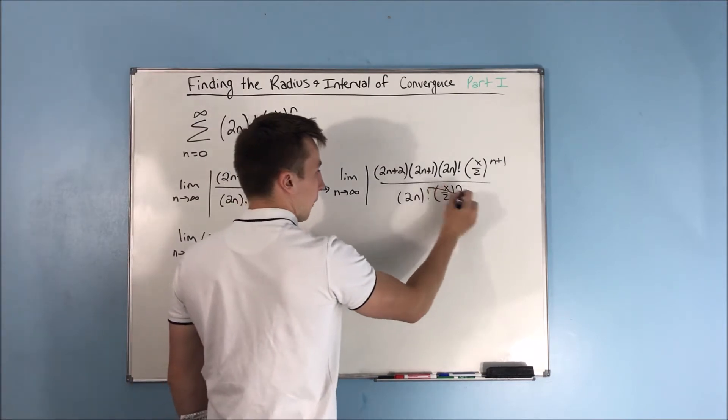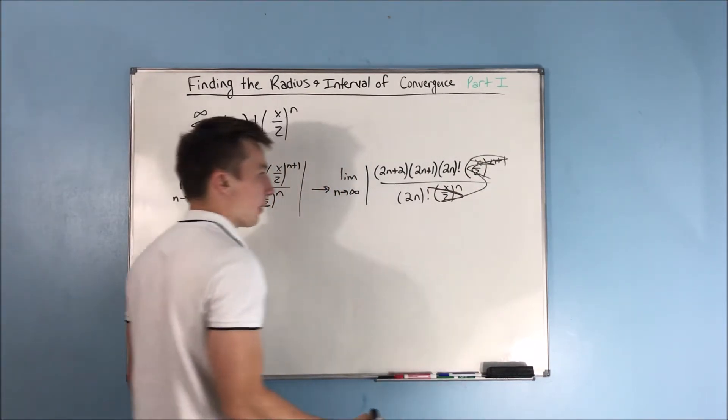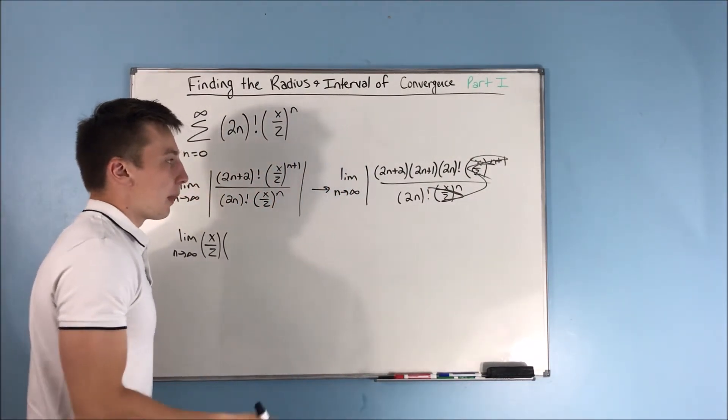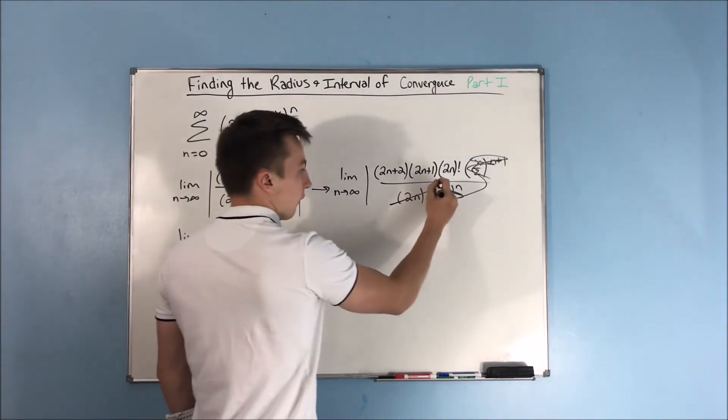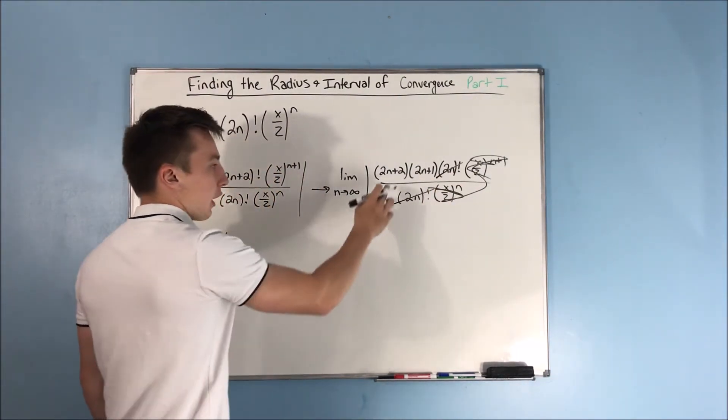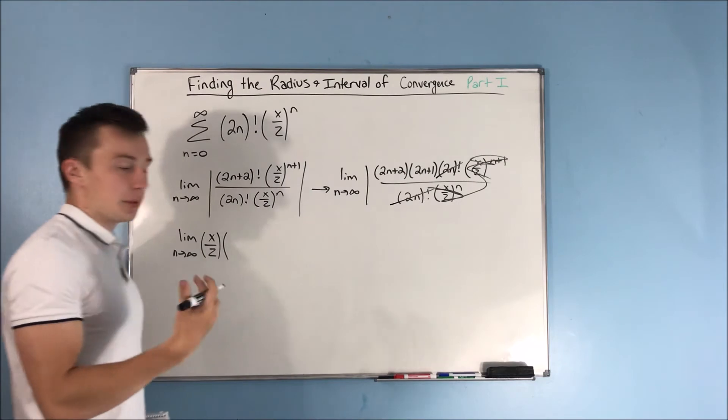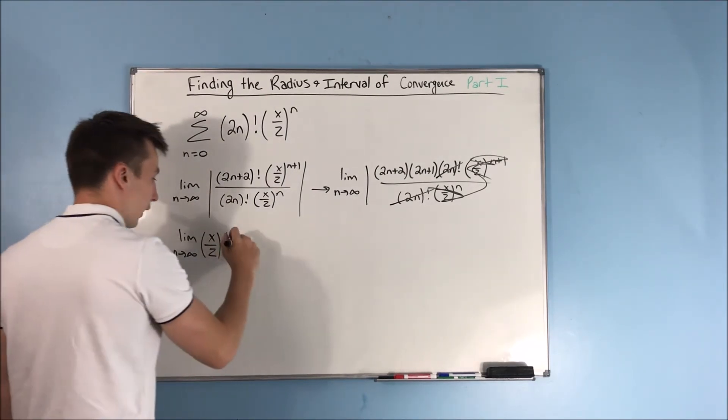We already figured out what happens with these things, we don't need to worry about the x over 2s and all that stuff. But you see here that the 2n factorials cancel out, and you're left with this 2n plus 2 times 2n plus 1. That's what you're going to get here.